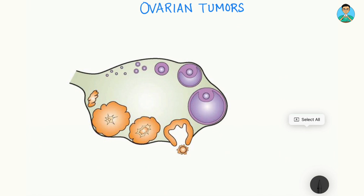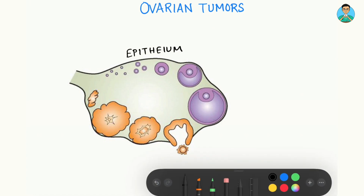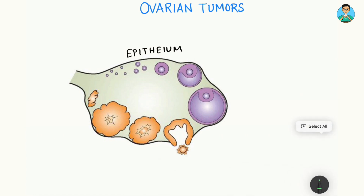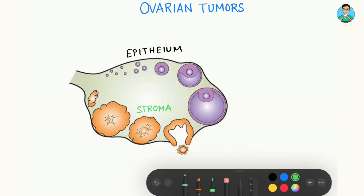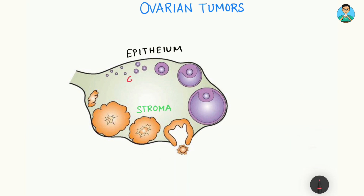The basic histology is that the ovary is surrounded by your epithelium. Beneath the epithelium, the ovary has two components. One is the ovarian stroma — this part which is the stroma — which has stromal cells. And we have the other major component, that is your germ cells, marked over here with purple. So these three components are the major histological components of the ovary.